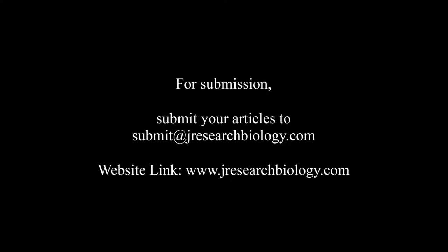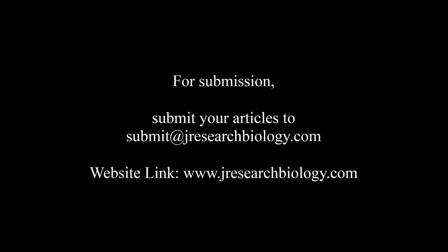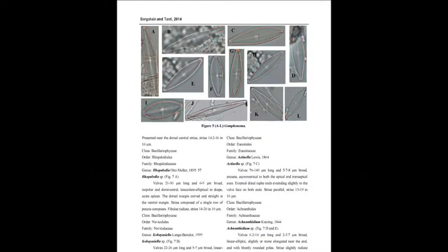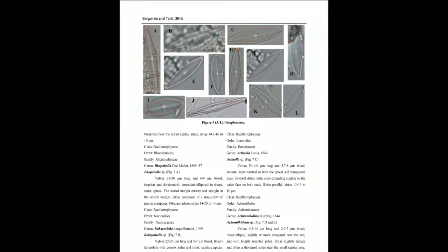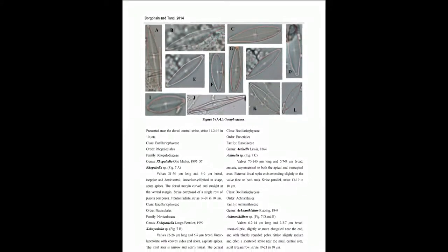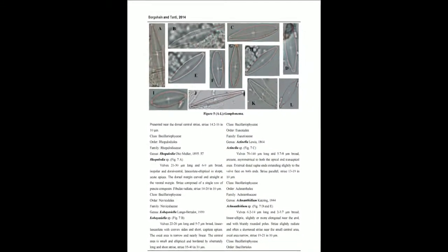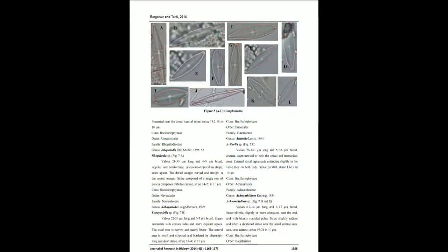Altogether, 103 species of diatoms belonging to 20 genera were recorded. Occurrence of diatoms varied across all four different study sites. The dominant genera include the following.